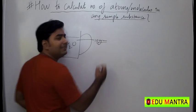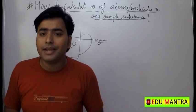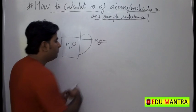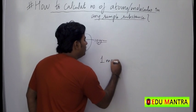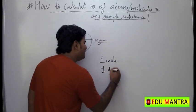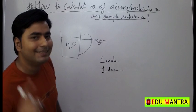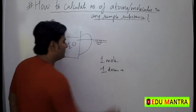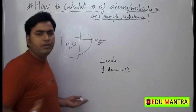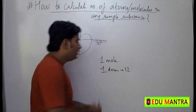We know one magical quantity in chemistry, and that is the mole concept. What is one mole? One mole is just like one dozen. What is one dozen? It is 12 — 12 entities of any quantity. If it is one dozen, it has to be 12.